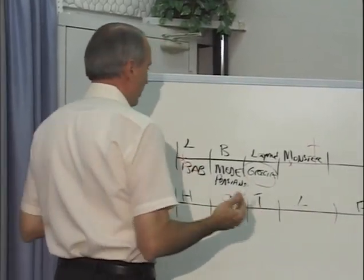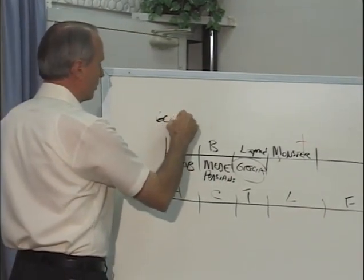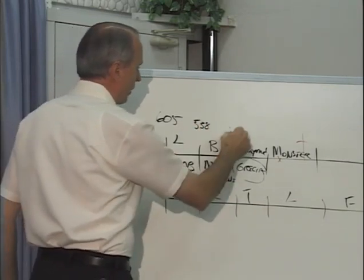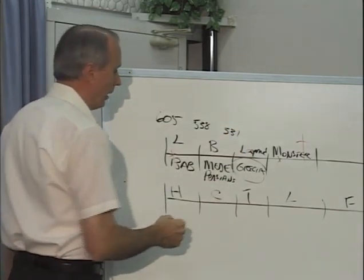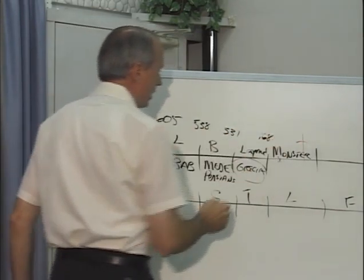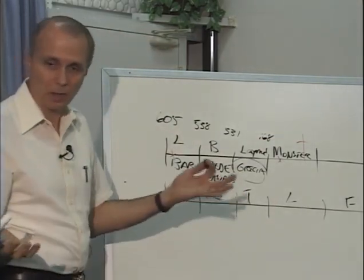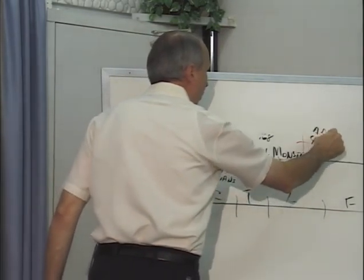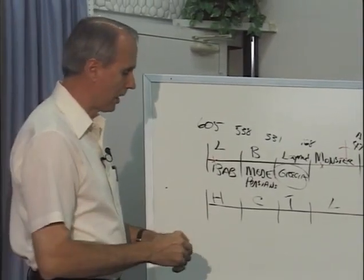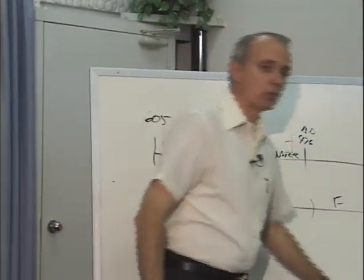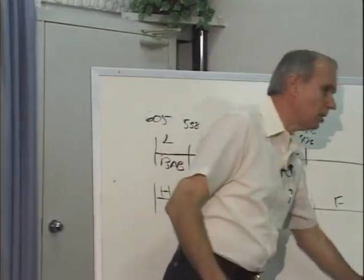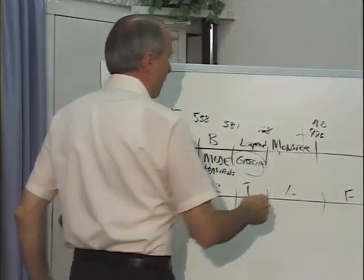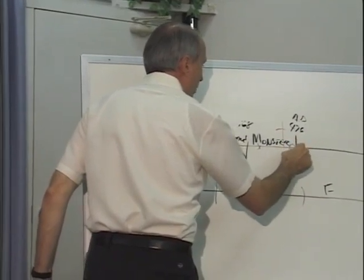Putting a few dates on this, we can say that the vision with Babylon begins 605. Babylon falls in 538. The Medes and the Persians fall in 331. The Grecian Empire falls in 168 at the Battle of Arbilla. And the Roman Empire came to an end in A.D. 476. It's generally conceded. Now, maybe you wish to quibble about a year or two. It doesn't matter. But in general terms, we're looking at the progression of time.